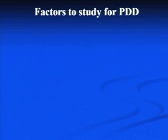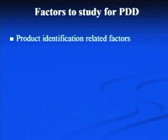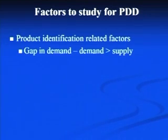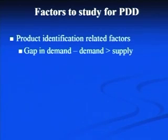When we go for the design and development of a new product — as this is a basic need for every company nowadays — they have to compete with their competitors, offer new products, new functionalities, and new features. There are certain factors we have to study before taking up a new product idea. Product identification related factors: first is the gap in demand, meaning there is a huge gap between demand and supply — existing manufacturers are not able to meet the existing demand. So we can take up that product idea to fill the gap, which is favorable as it requires less marketing effort.